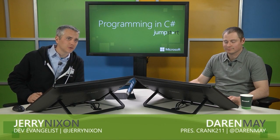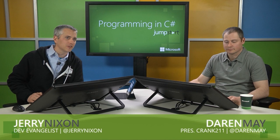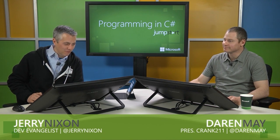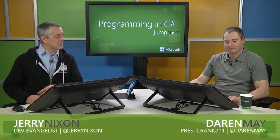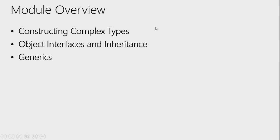Welcome back. This is module two for C-Sharp Fundamentals. In this module we're going to talk about constructing complex types — how to build out and use the type system to model types that help us solve problems. We'll also cover object interfaces and inheritance, and touch on generics, one of my favorite parts of C-Sharp and the .NET Managed Runtime.